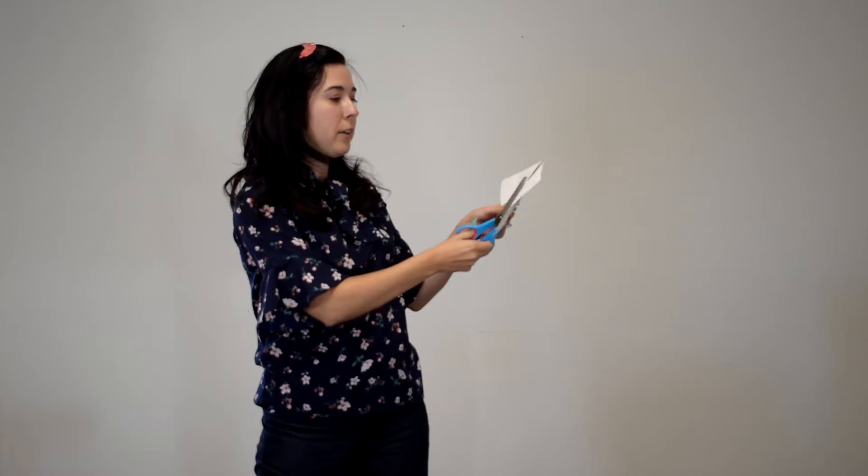The next step that you're going to do is you're going to take your scissors and you're going to cut horizontally where the rectangle meets the triangle.